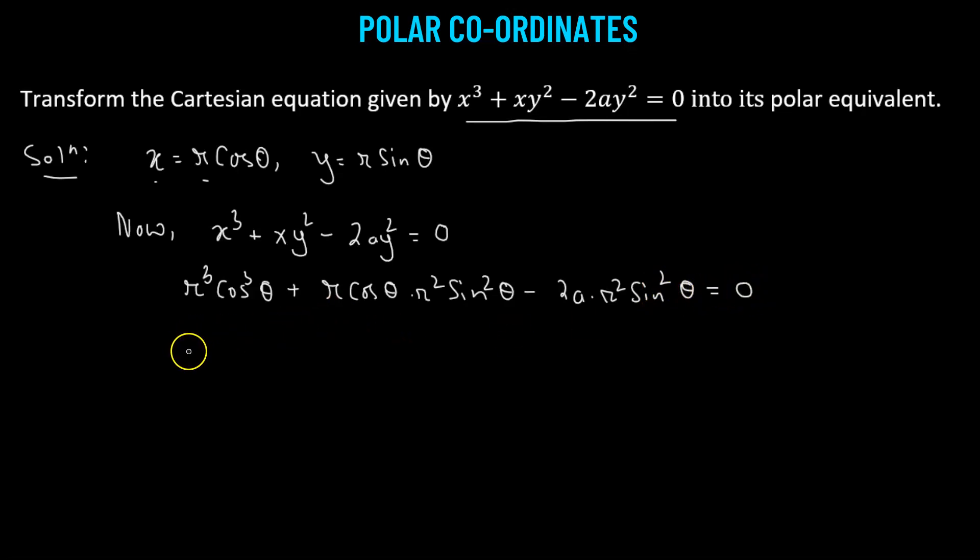Now, we get r cubed times cosine cubed theta plus r times r squared. That's going to give us r cubed. So we have r cubed times cosine theta times sine squared theta minus 2a times r squared times sine squared theta equals 0.